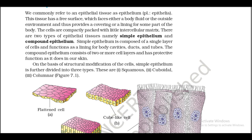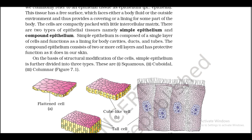Simple epithelium is composed of a single layer of cells and functions as a lining of body cavities, ducts, and tubes. The compound epithelium consists of two or more cell layers and has a protective function, as it does in our skin.